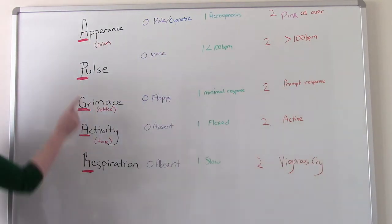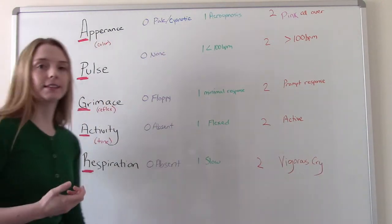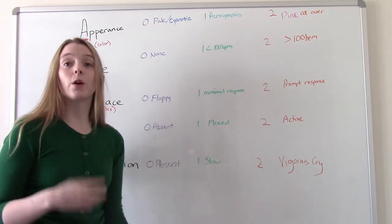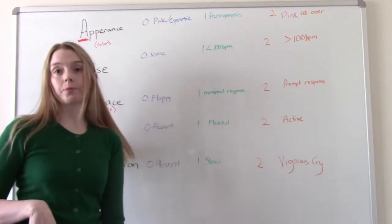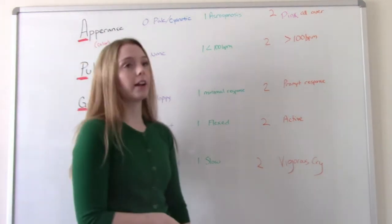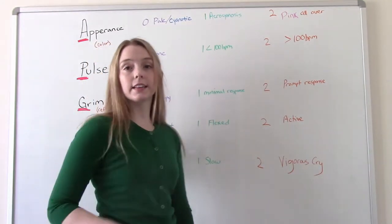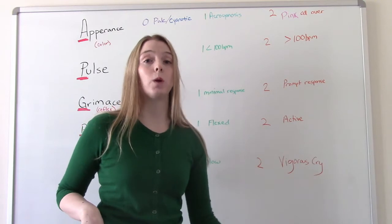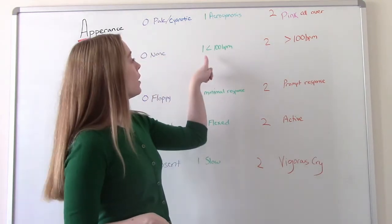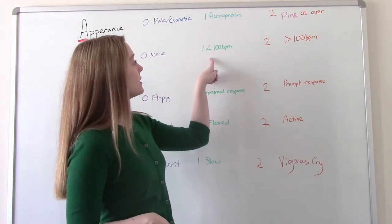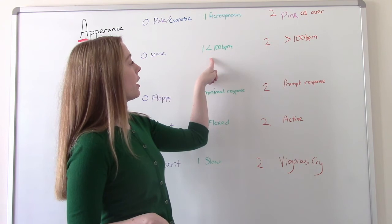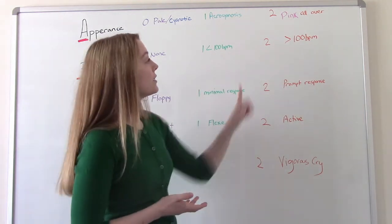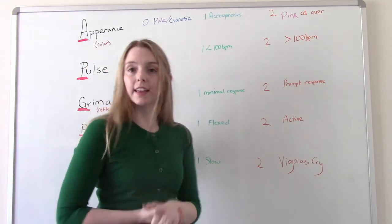The next category is P for pulse. Do they have one? If they don't, it's a zero. If they do, is it greater than or less than one hundred? Remember, normal newborn pulse is 110 to 160. If they have a pulse but it's less than 100 beats per minute, they get a one. If it's higher than 100 beats per minute, they get a two.